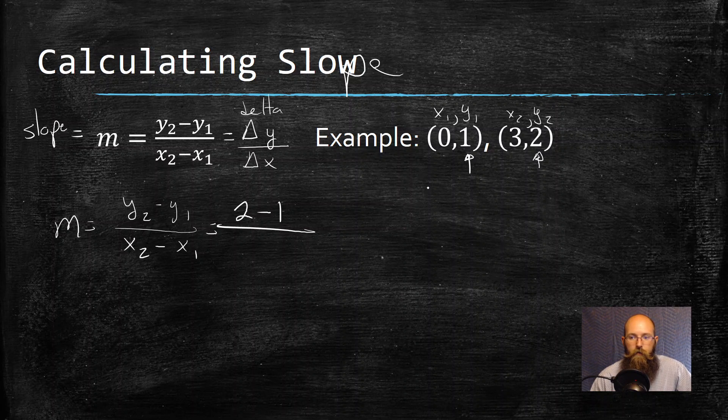So I'm going to write down two, subtract y1, which is one. That is over x2, which comes from over here, which is a three, and then x1, which is here, and it is zero. So now it's two minus one, one, what's three minus zero, three. So my slope is one third.